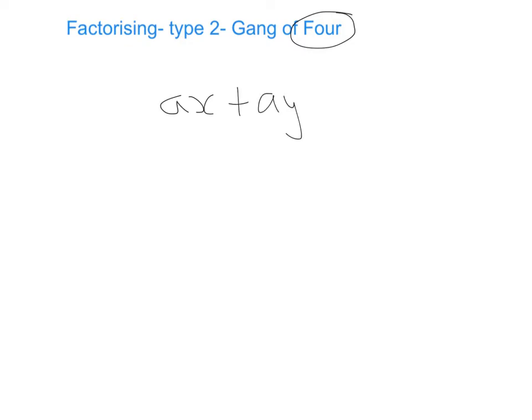So our first example is going to be ax plus ay plus bx plus by, and you're going to be asked to factorise that on the exam. First of all, ask yourself: is it type number 1? The reason it's not type number 1 is because there's no common factor in common with all of the terms. However, what you might notice is that the first two terms have something in common, which is the letter a, and the third and fourth terms have a letter in common, which is the letter b.